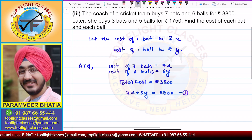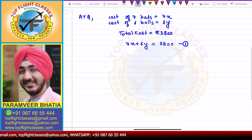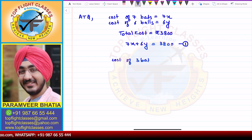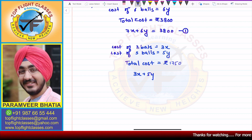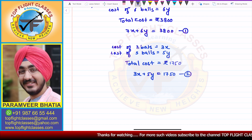In the second case, later she buys three bats and five balls for rupees 1750. So cost of three bats equals 3x, cost of five balls equals 5y, and the total cost is rupees 1750. So from here I get 3x + 5y = 1750. This is the second equation.